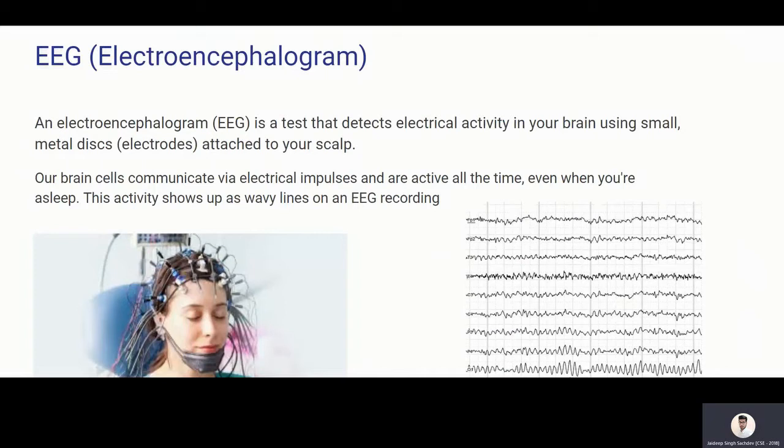Electroencephalogram is a test that detects electrical activity in your brain using small metal disks. So what we do is that in a subject or in a person, he wears an EEG headset and that EEG headset is just like a normal headset which I was wearing. It has electrodes in it.